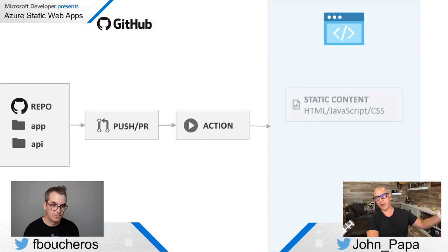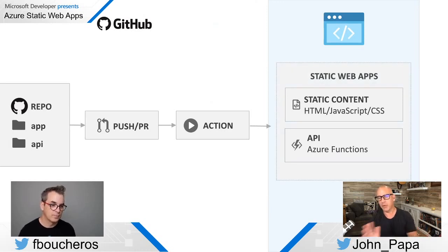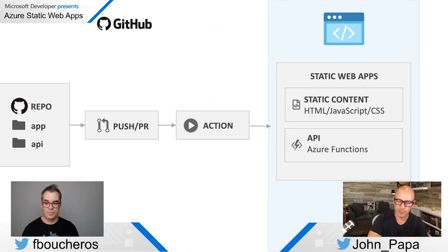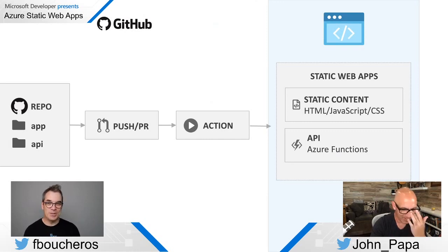This is where you end up: your static content gets deployed, your APIs get deployed, and collectively they are your static web app. You don't have to set up CORS or reverse proxies — they know how to talk to each other out of the box. All that security is there, and you get an SSL certificate.